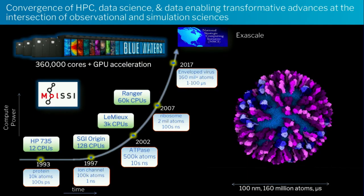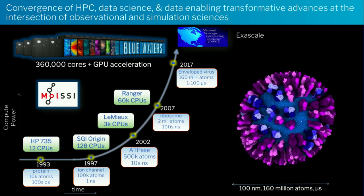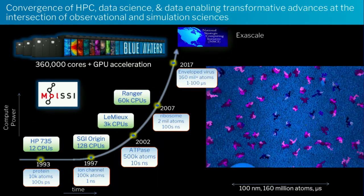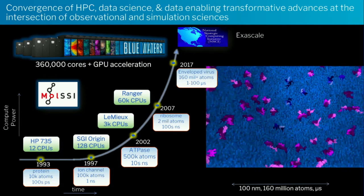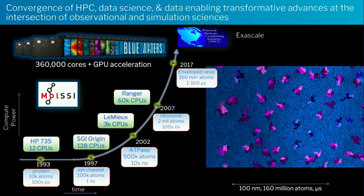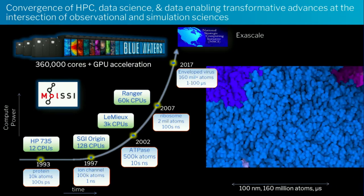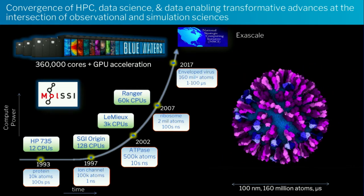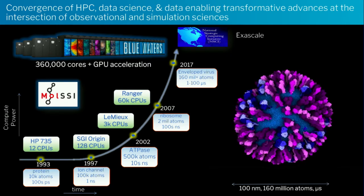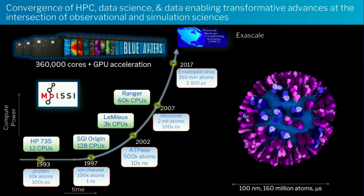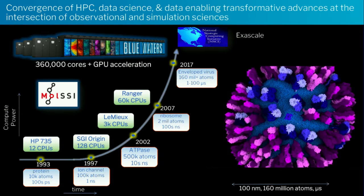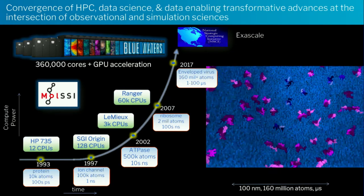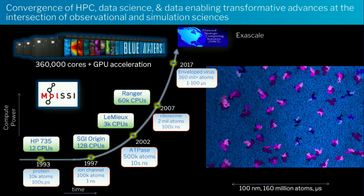All of you in here are no strangers to the tremendous growth in computing power that we've had over the past couple of decades. I'm showing here the tremendous rise in compute power as a function of time for the various supercomputing sites in the United States. What you can see is that we've been able to harness this compute power to address outstanding questions in computer-aided drug discovery and biomedical research. This enormous growth in computing power has really enabled us to increase the size of the systems we're studying, the complexity of those systems, and the fidelity of our methods.